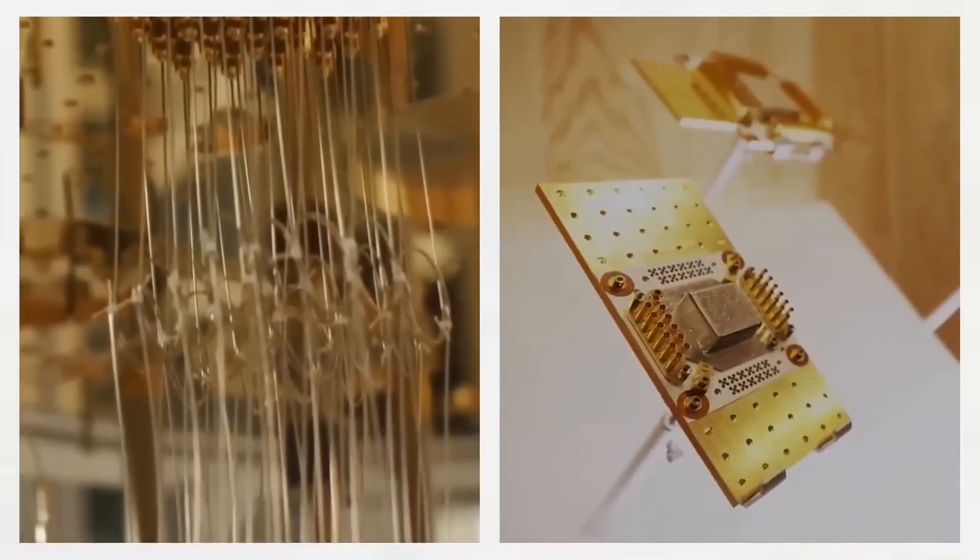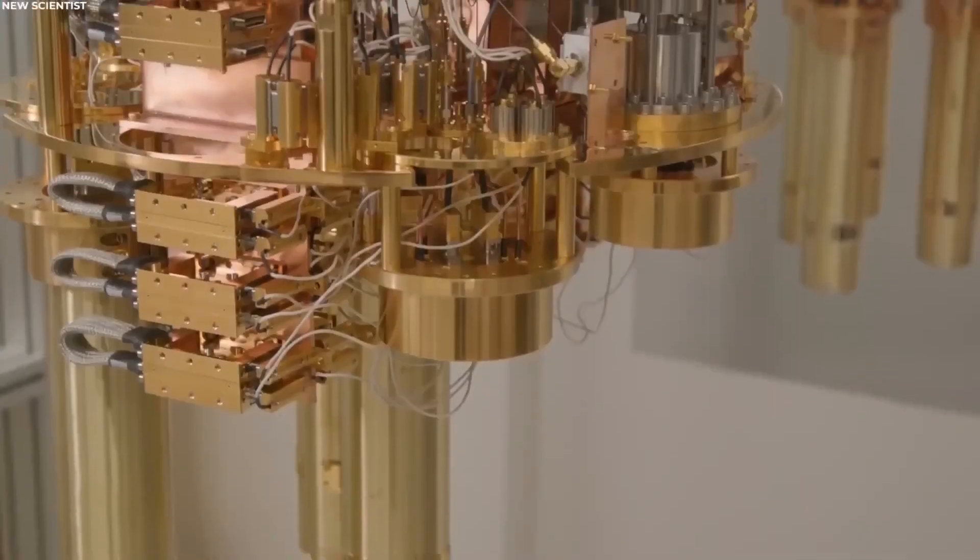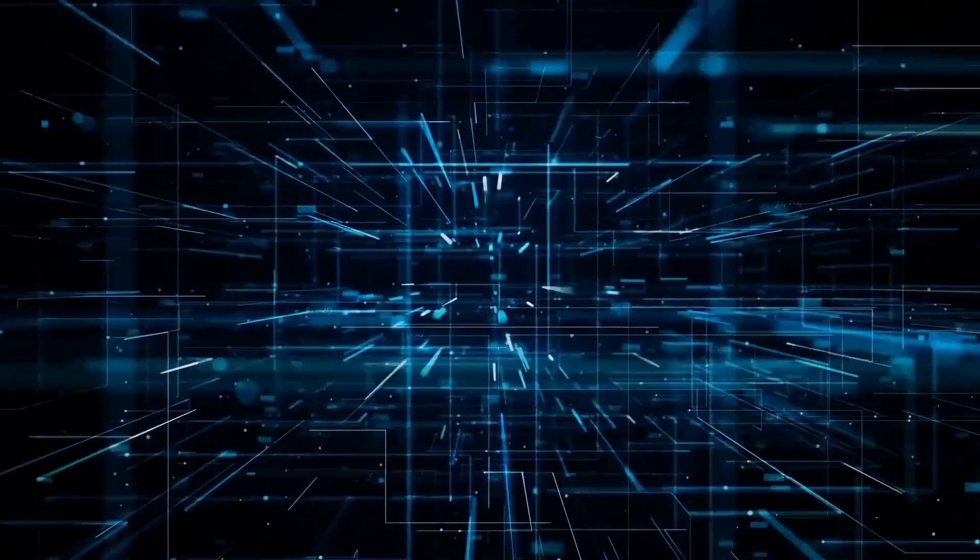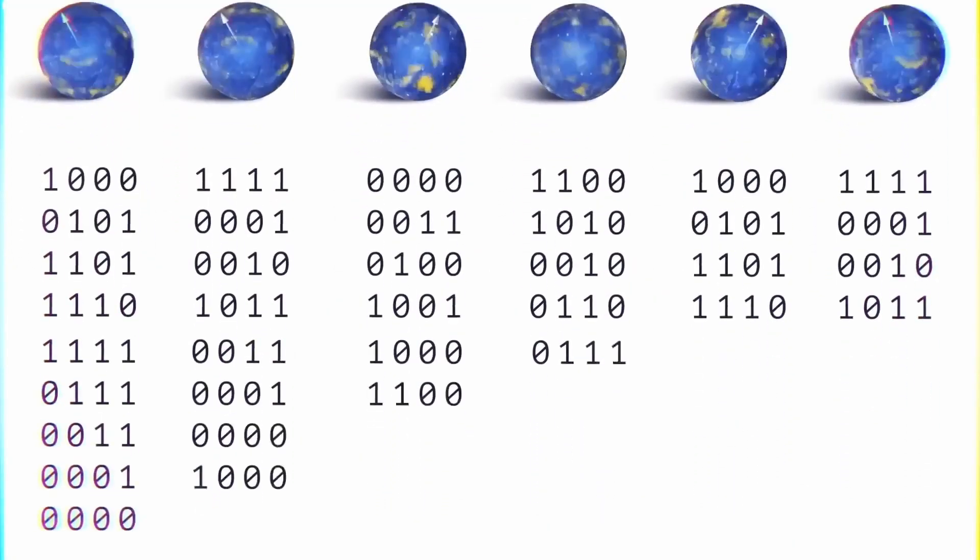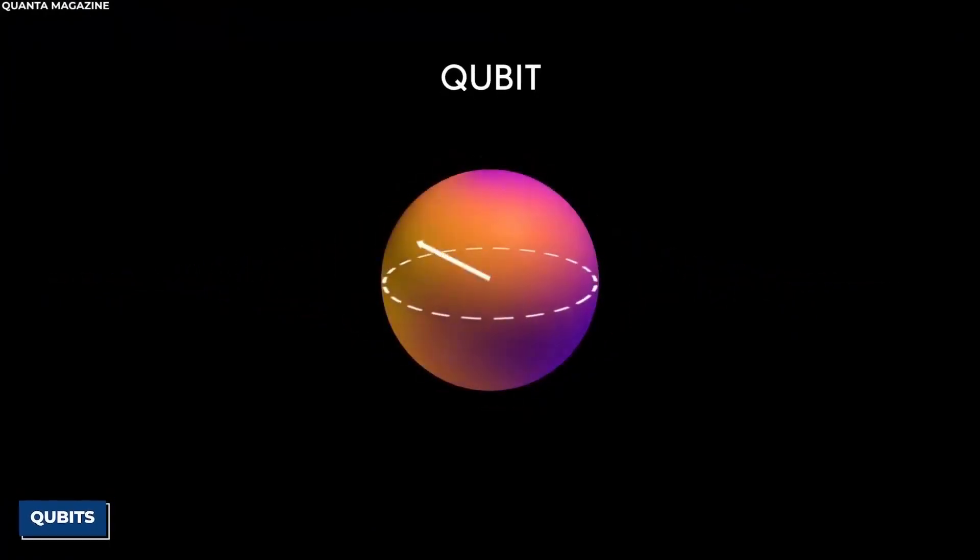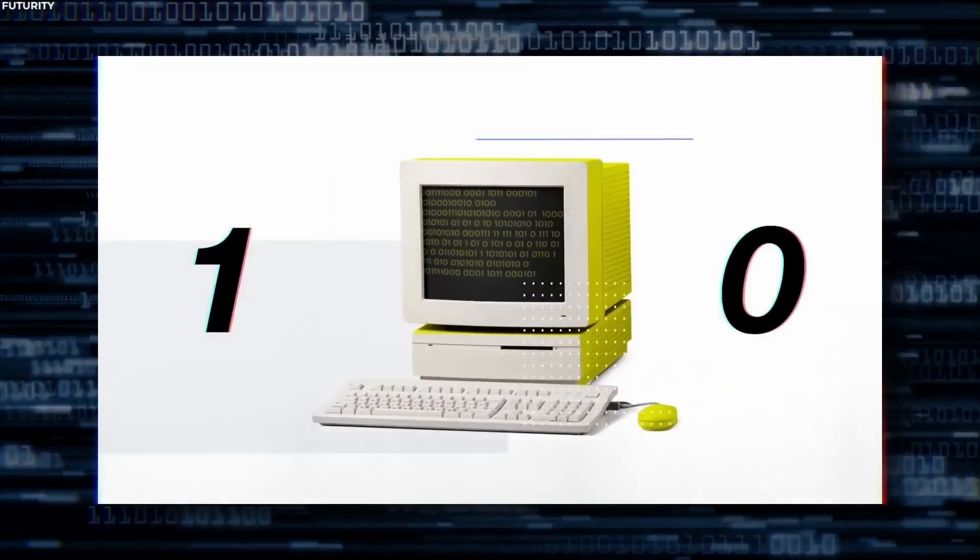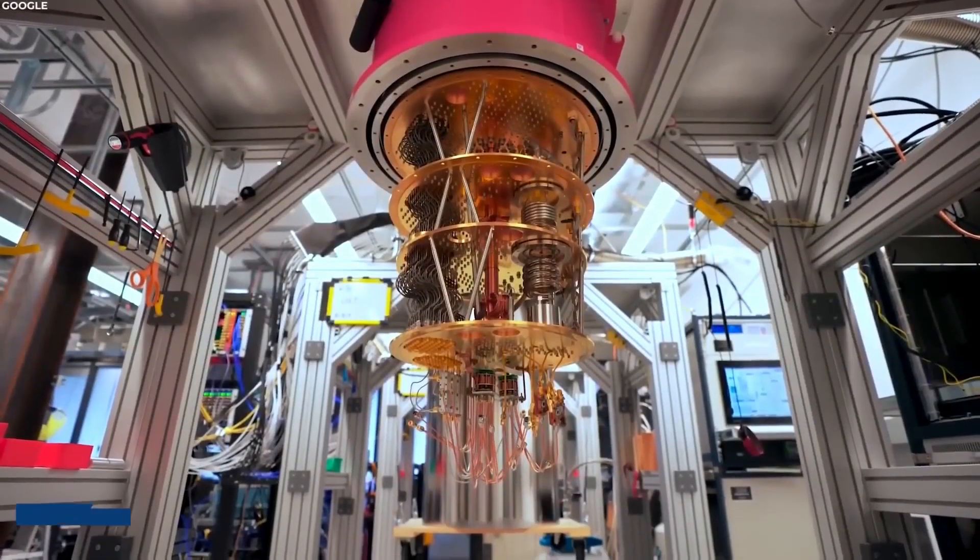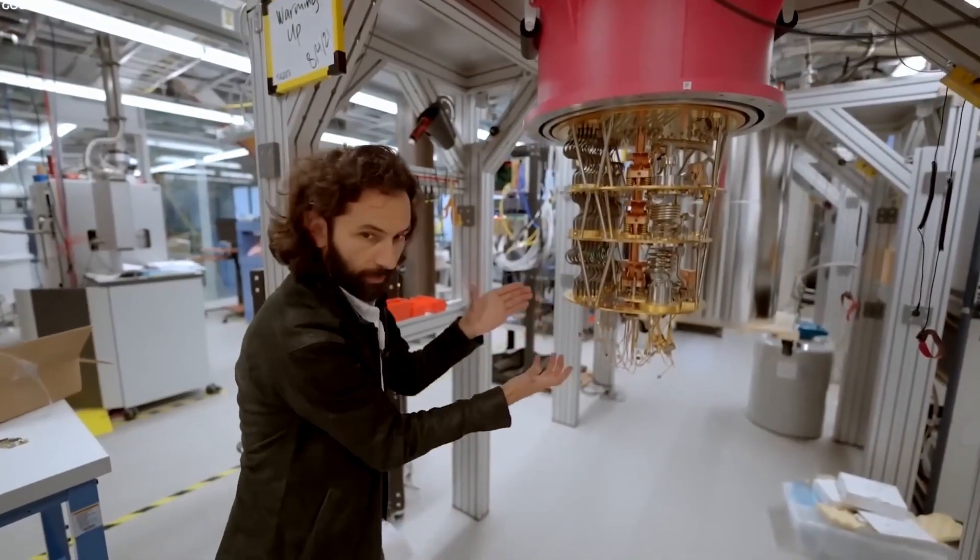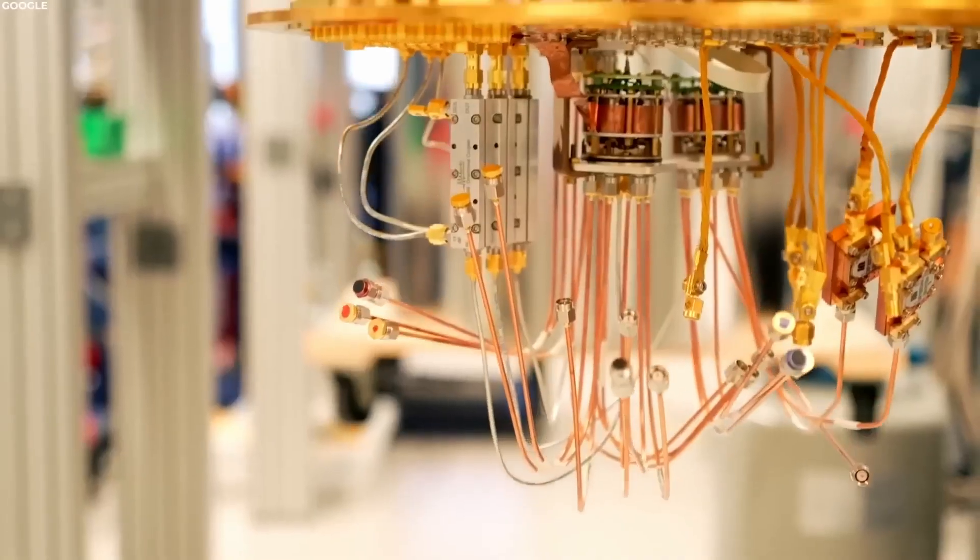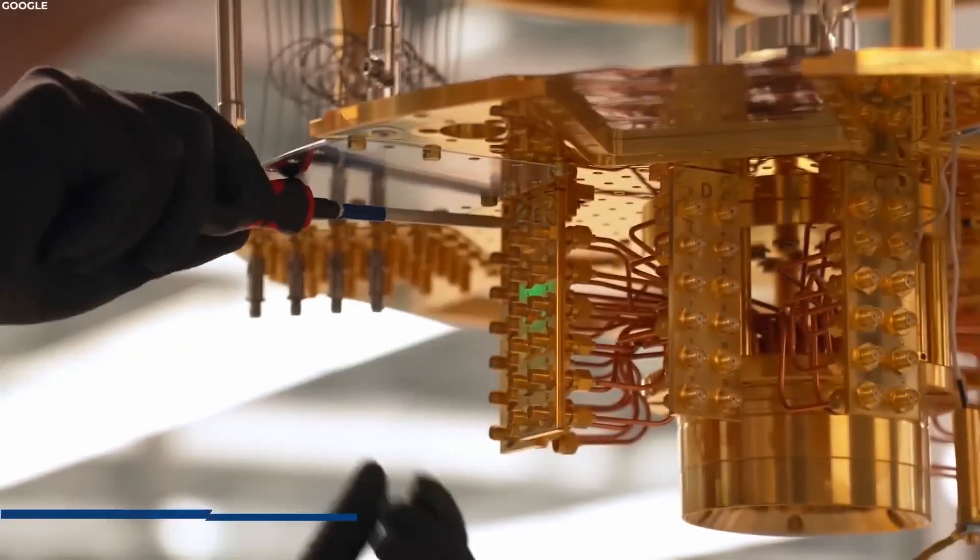As we turn our gaze, we find adiabatic quantum computing, a different kind of performance, gradually evolving quantum systems to untangle the most complex of problems through quantum annealing. But let's not forget, this is a delicate symphony, one that demands perfection. Yet quantum computers, much like performers under the spotlight, are sensitive and prone to error. Maintaining quantum coherence becomes the backstage crew, working tirelessly to ensure the show goes on without a hitch. Error correction takes on the role of the unsung hero, tirelessly working to ensure every quantum note hits the right pitch.